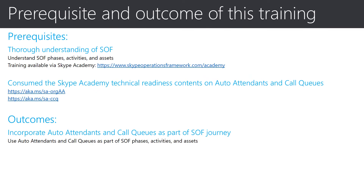This training is delivered with the assumption that you have a total understanding of SOF — all the phases, activities, and assets. If not, I would strongly recommend you take the previous SOF trainings available through Skype Academy so that you can relate to what will be discussed. We have also released specific technical trainings for auto-attendance and call queues that delve into the capabilities in detail via Skype Academy, which I strongly recommend consuming prior to this training, as we are not going to talk about the capabilities in detail. The expected outcome of this training is for you to incorporate auto-attendance and call queues as part of a SOF journey and leverage the assets that have been updated.